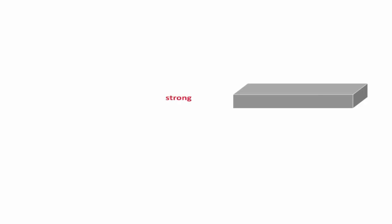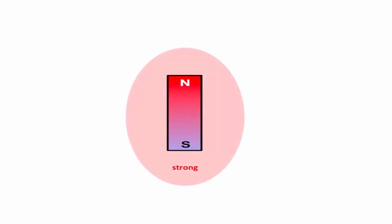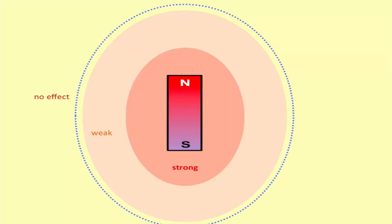Next, we take the nail and place it quite far away from the magnet. Now, the nail is not attracted by the magnet. So we can say that the force of attraction by the magnet is strong near the magnet. And as you go far away from the magnet, the force of attraction becomes weaker, till there is an area in which the magnet has literally no effect. So intuitively, we would say that there is an area around the magnet in which the magnet exerts its force.